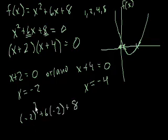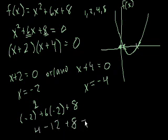(-2)² is 4, minus 12, 6 times -2, plus 8. And sure enough, that equals 0.